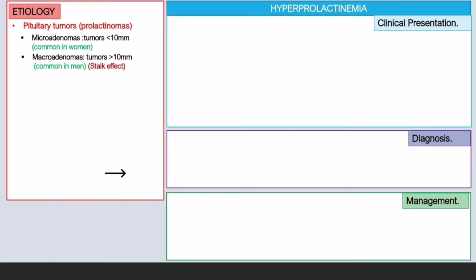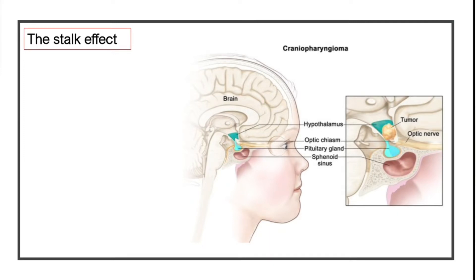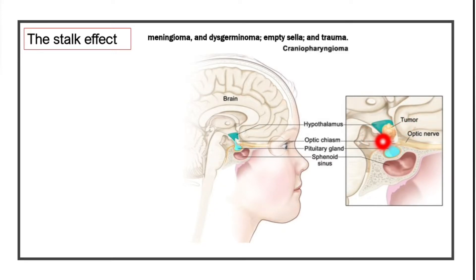There is an important concept called the stalk effect, which leads to visual defects. Not only craniopharyngiomas but also meningiomas, germinomas, empty sella, and trauma can cause this stalk effect. You can see here the tumor compressing the stalk.